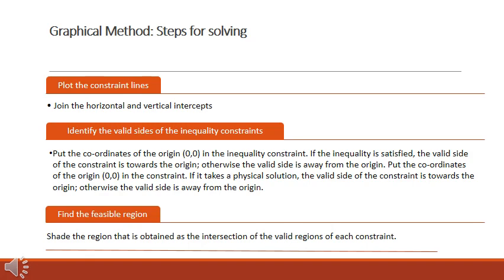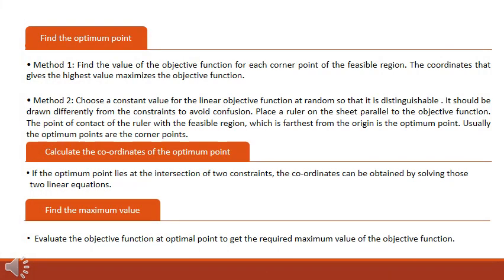The third step is to find the feasible region, which is the intersection of the valid region of each constraint. The fourth step is to find the optimum point. There are two methods. First, we can substitute the coordinates of each of the corner points of the feasible region in the objective function. The coordinates that give the highest value of the objective function is the optimum value.